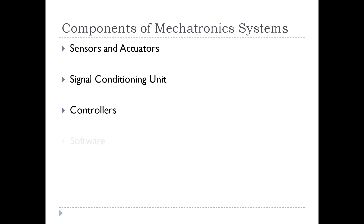The next component is software. Software contains the instructions for the operation, and the nature of these instructions will be such that they interact with the controllers. The final component is the display, where the output of the system will be shown.